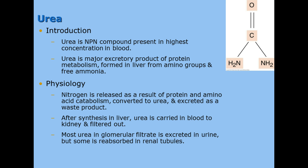First, we're going to talk about urea. Urea is the NPN compound that's in the highest concentration in the blood. It is the major excretory product of protein metabolism. It's formed in the liver from amino acids and free ammonia. Nitrogen is released as a result of protein and amino acid catabolism, converted to urea, and excreted as a waste product.